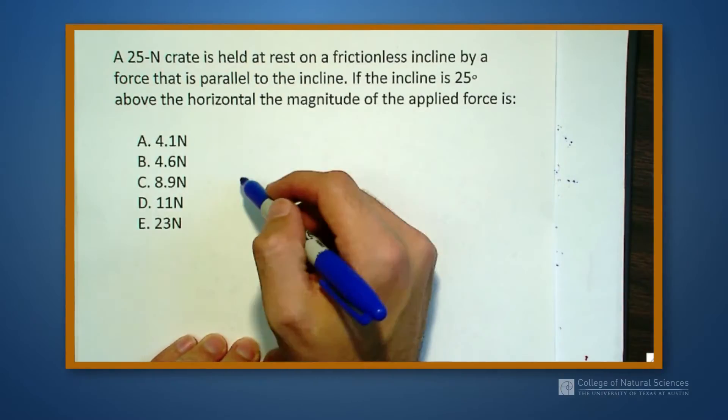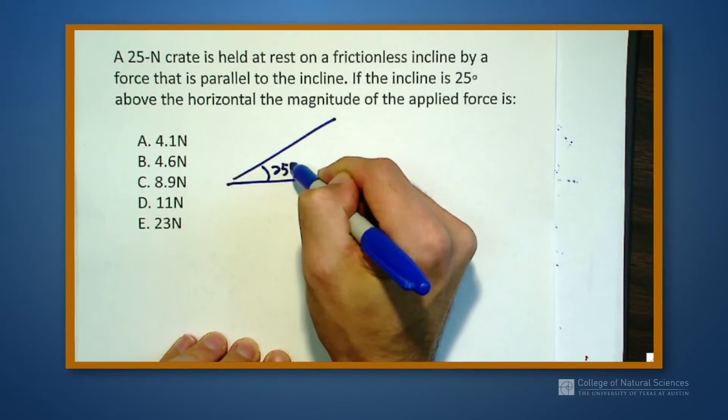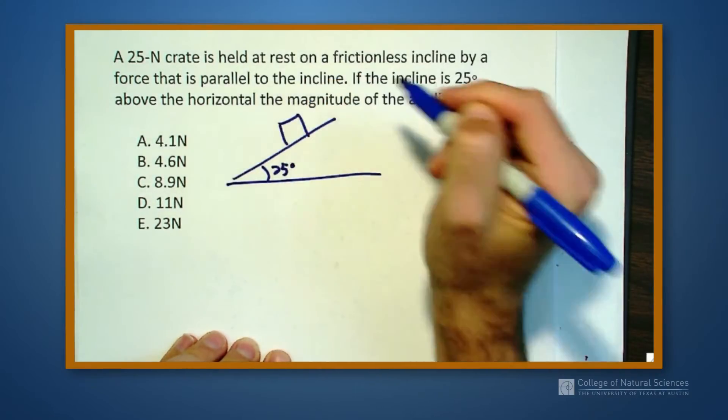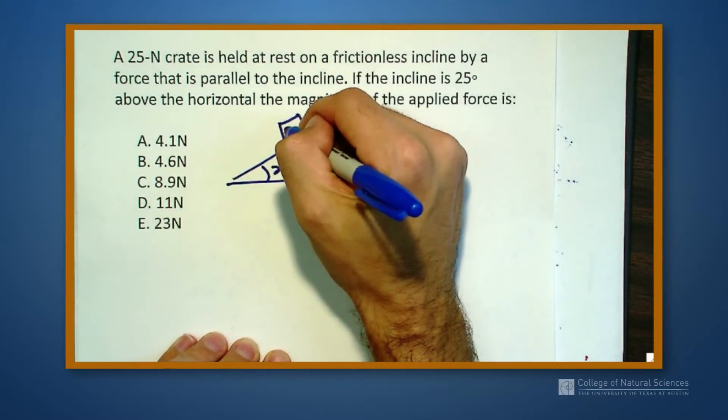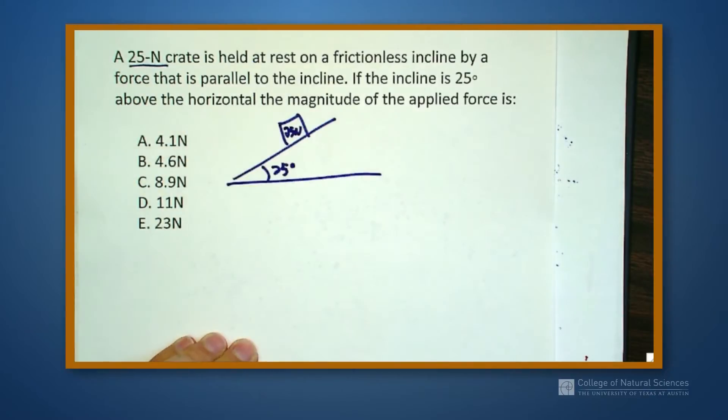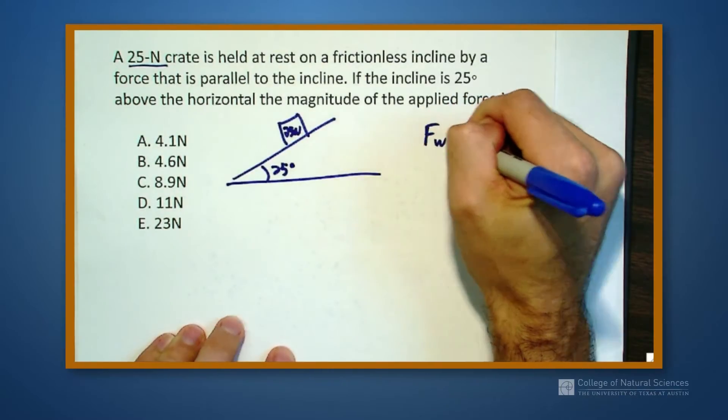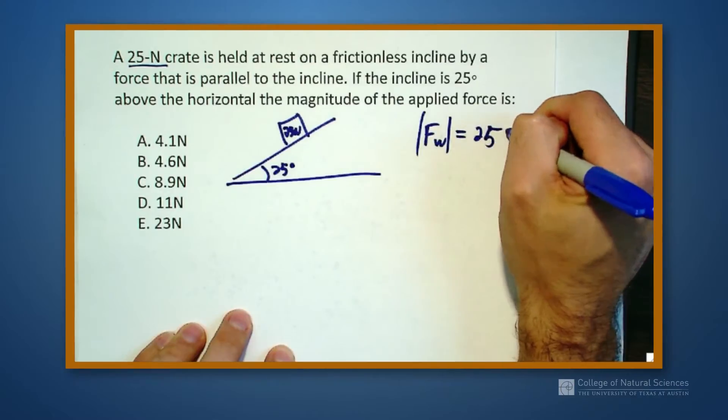Alright, so when I'm looking at this, it says I have an incline. It's at 25 degrees. I have a block that has a weight force of 25 newtons. This is a little bit of a weird thing. They give us in terms of newtons. So I'm looking at my units thinking 25 newtons—newtons is a force. So that means they're giving me my weight force has a value of 25 newtons.